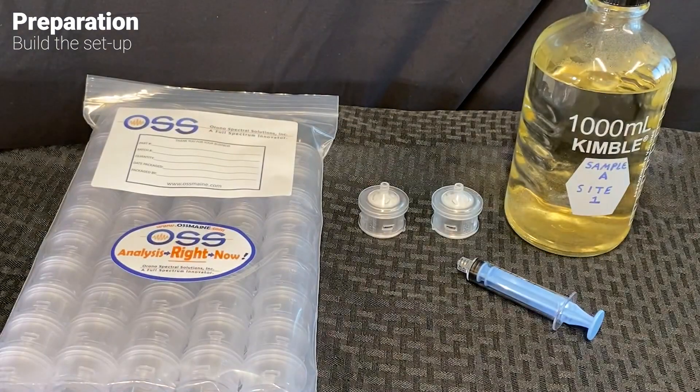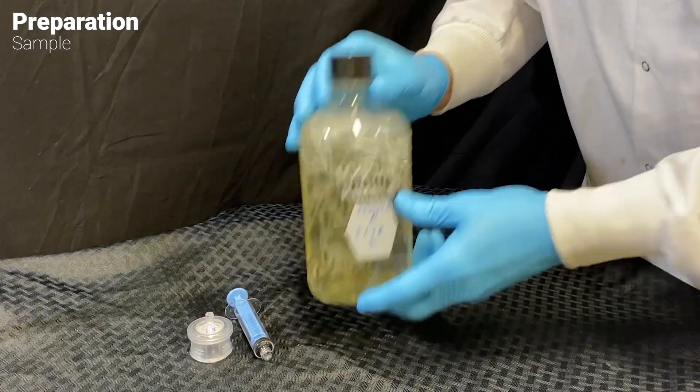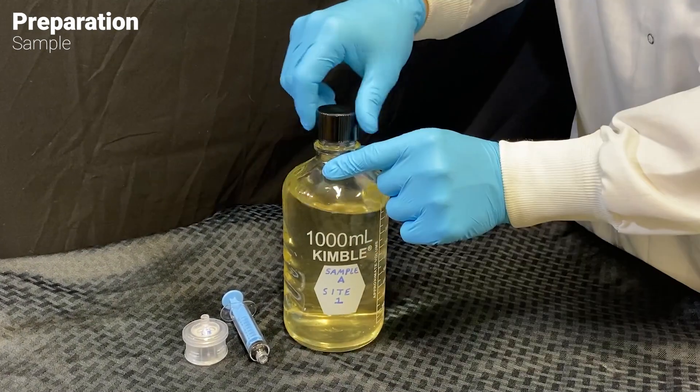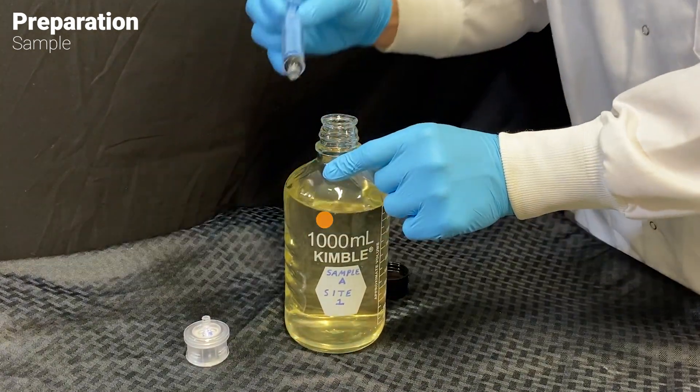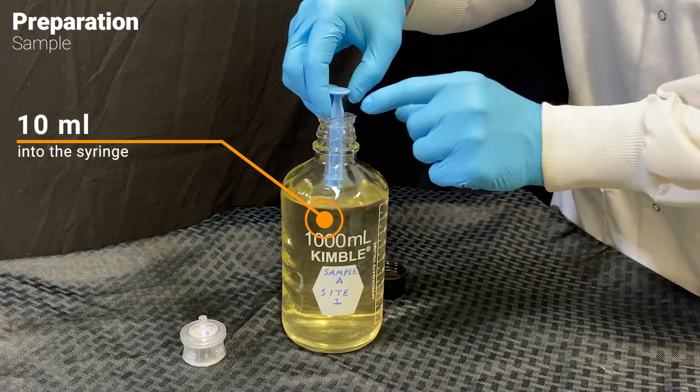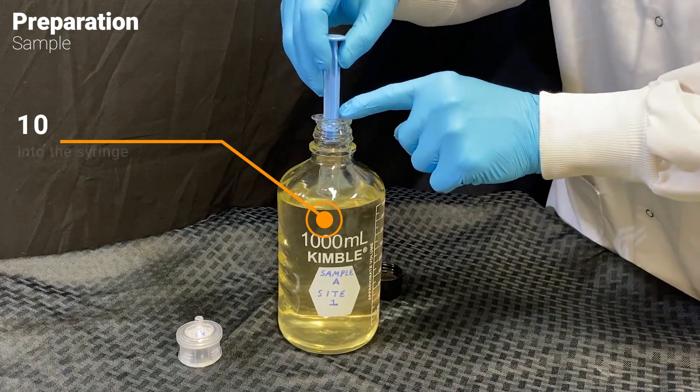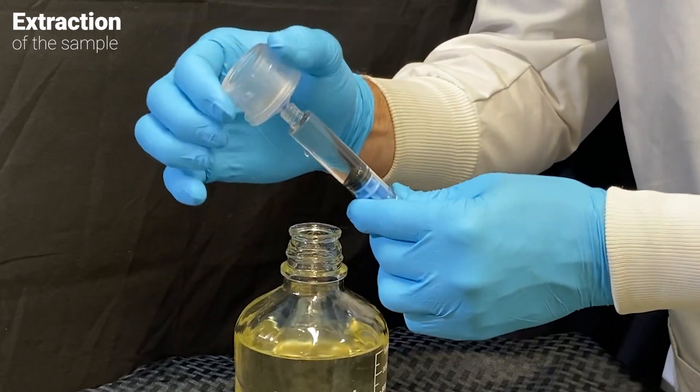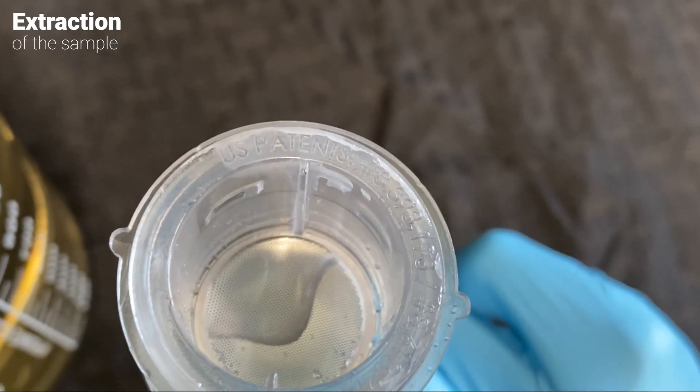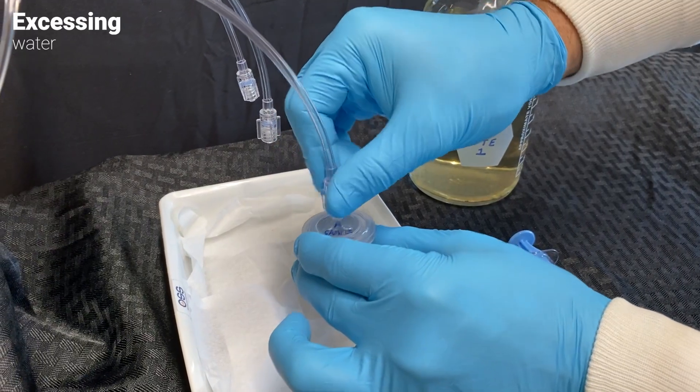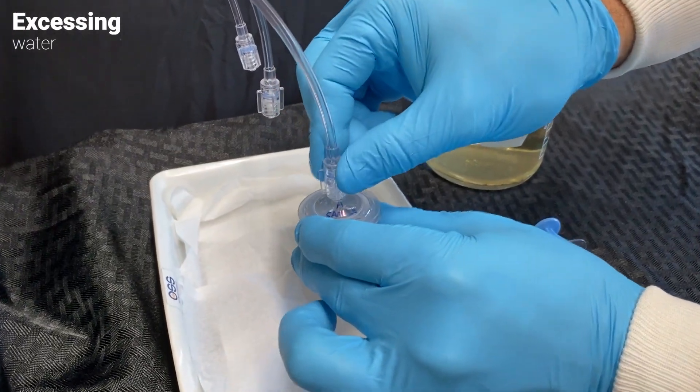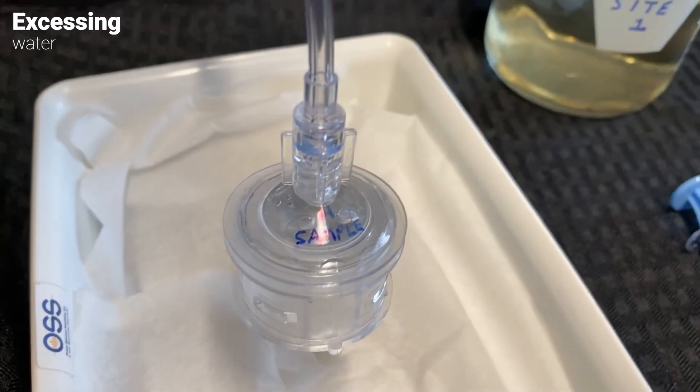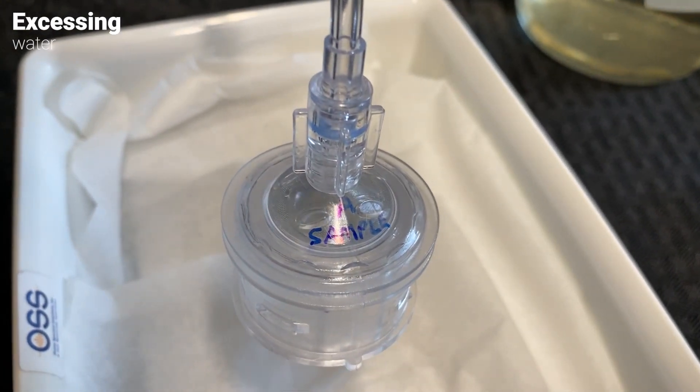For this we homogenize the sample by shaking it thoroughly. Open the bottle and take 10 mils of water with a plastic syringe. Next we firmly attach the OSS extractor and carefully squeeze the water through the filter membrane. We pour off excess water and dry the extractor by using compressed air. Drying it this way usually takes a couple of minutes.